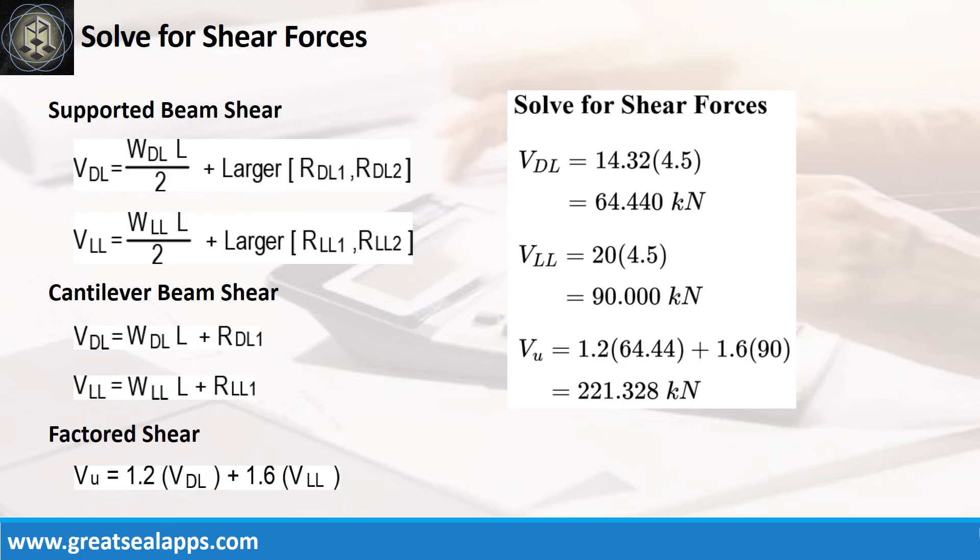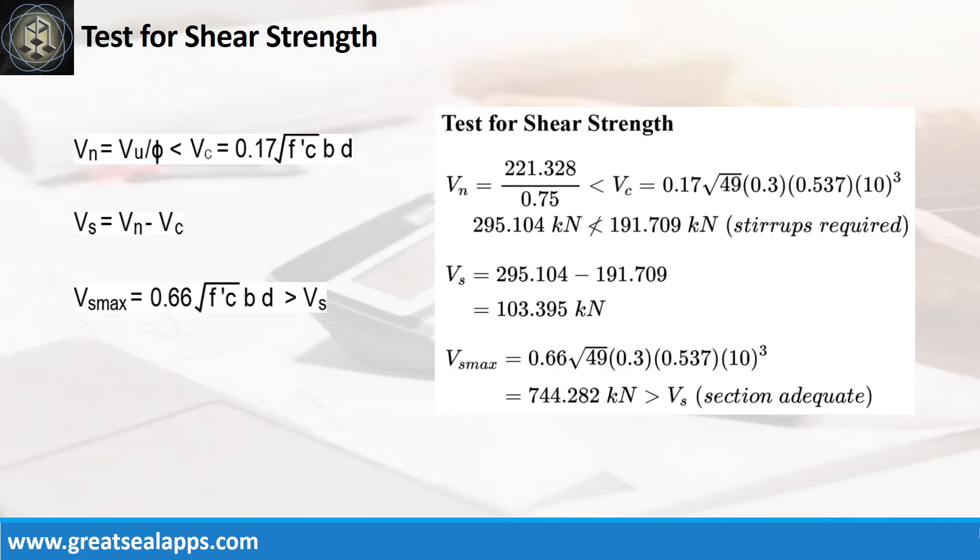The shear force from dead load is 64.44 kN, and live load is 90 kN for a factored shear force of 221.328 kN. The nominal shear force is 295.104 kN, greater than 191.709 kN, concrete capacity. Additional shear capacity from stirrup is 103.395 kN, less than 744.282 kN, maximum stirrup capacity.